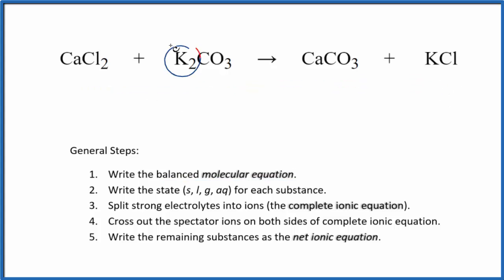You can see I have two potassium atoms here, just one here. Let's put a two in front of the KCl. That balances the potassiums and the two chlorines. We have one calcium and one calcium, and then a carbonate and a carbonate. So this is the balanced molecular equation.